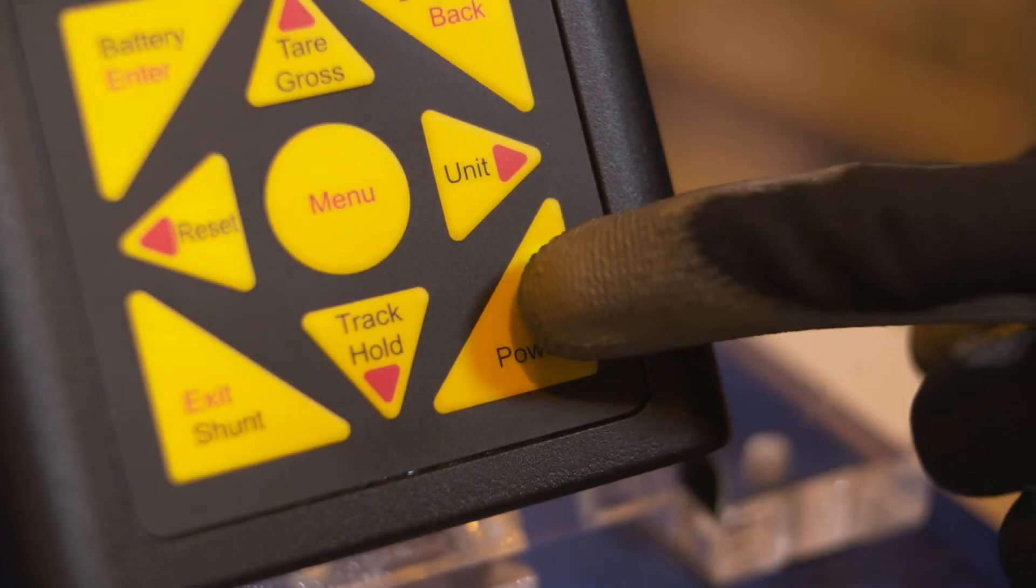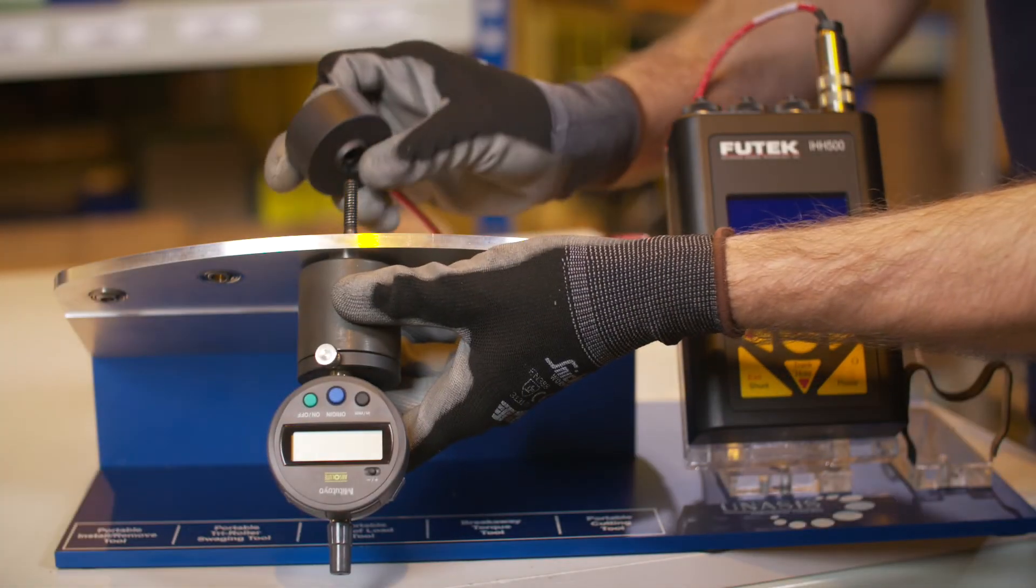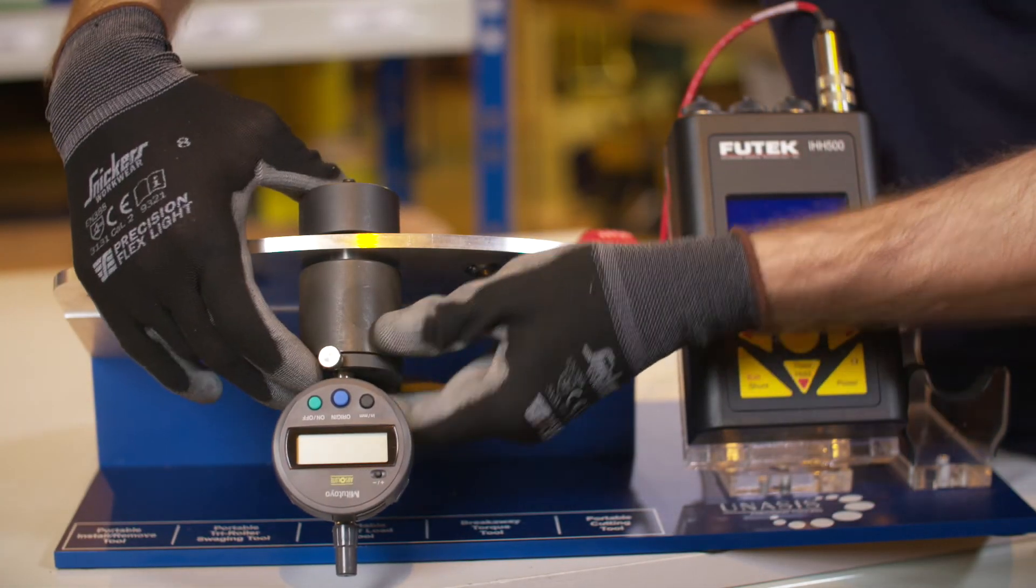When testing is finished, make sure you turn off the indicator prior to disassembly. To test the bearing from the opposite side, simply rotate the configuration and repeat the process.